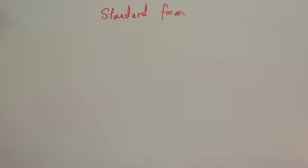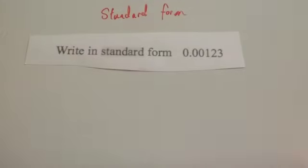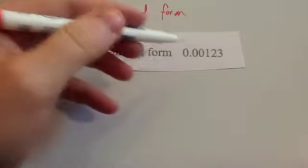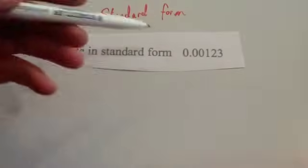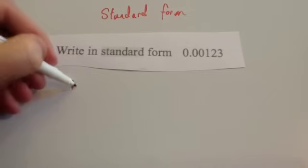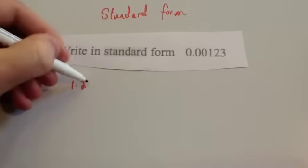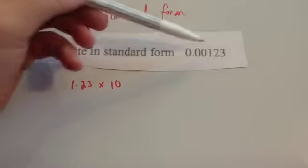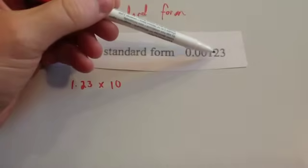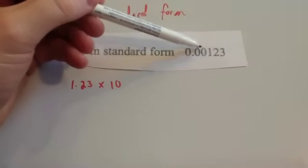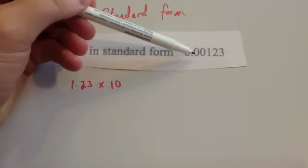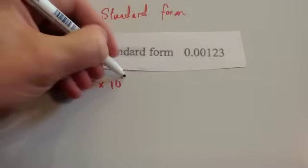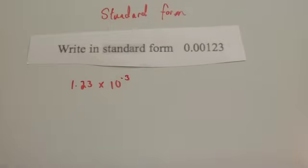The next question says: write 0.00123 in standard form. Again, you're going to have to start with a number between 1 and 10, so we're going to use 1.23. And if the decimal point was here, we'd have to move it one, two, three times to the left. So it's going to be 1.23 times 10 to the power of minus 3.